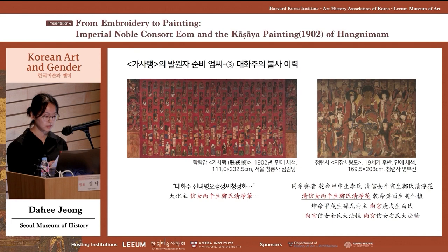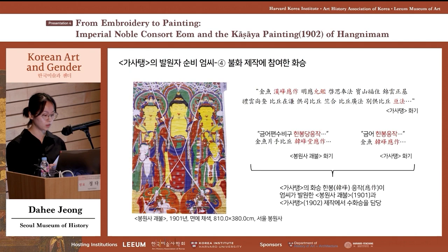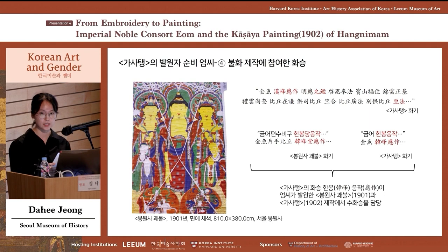It is believed that Lady Eum got to know the patron through the Sanggongs. It is also worth noting that Eumsaek is the first name mentioned in the list of painter monks in the Bongunsa Gwaebul in 1901 and Ga Sa Taeng in 1902, likely serving as the head painter monk for Buddhist projects commissioned by Lady Eum. In addition, the other monks featured in the Ga Sa Taeng inscription — Jaegyeom, Junghyeon, Bongbeop, Yungam, and Gungbeop — also participated in Buddhist projects commissioned by Eum before 1902, confirming that Eum entrusted the production to monks she had previously worked with.